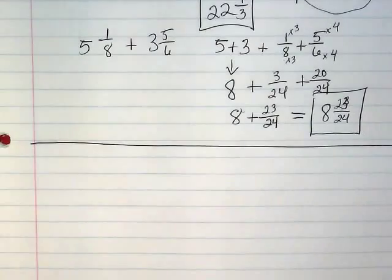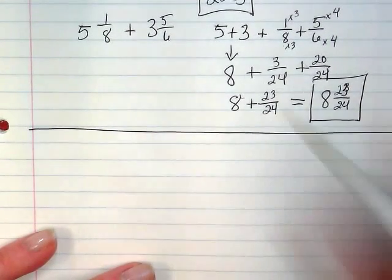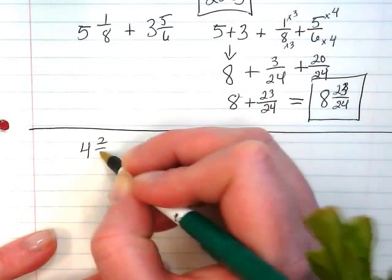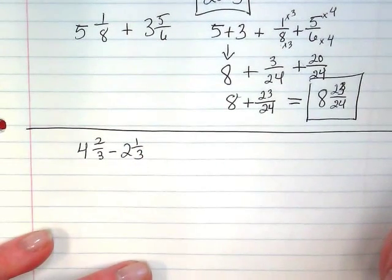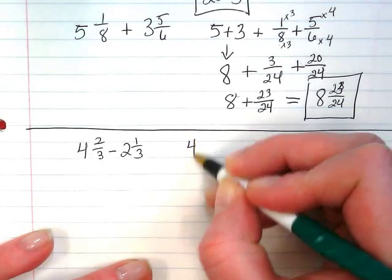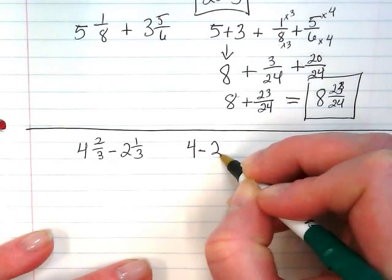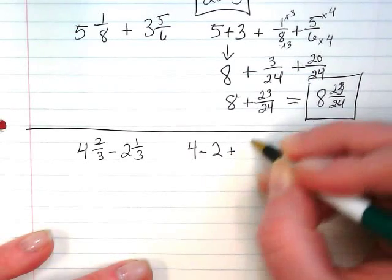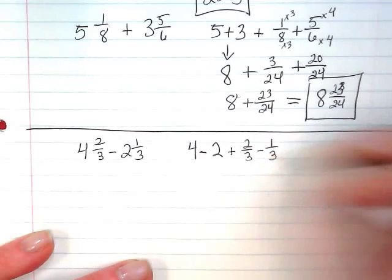I'm going to try the same idea with some subtraction problems. Let's start off pretty easy with 4 and 2 thirds minus 2 and 1 third. We're going to use commutative property, take it apart a little bit, and say 4 minus 2 and 2 thirds minus 1 third.